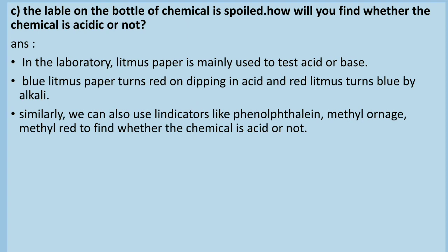Question four (c): the label on a bottle of chemical is spoiled. How will you find whether the chemical is acidic or not? In the laboratory, litmus paper is mainly used to test acid or base. Blue litmus paper turns red when dipped in acid, and red litmus turns blue with alkali. We can also use indicators like phenolphthalein, methyl orange, and methyl red to find whether the chemical is acidic.